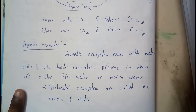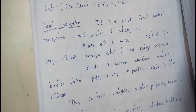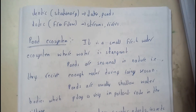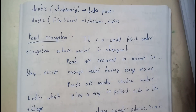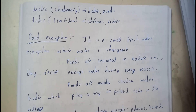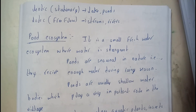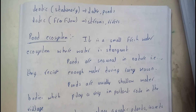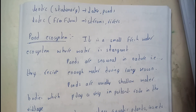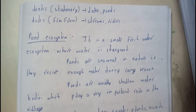Aquatic ecosystem is further divided into two types: freshwater ecosystem and marine water ecosystem. Freshwater ecosystem is divided into lentic and lotic. Lentic means stationary water — lentic stands for lakes and ponds. Lotic means free flow — lotic means streams and rivers.